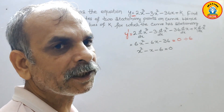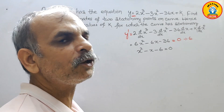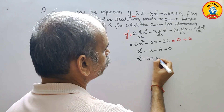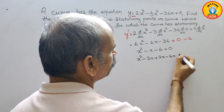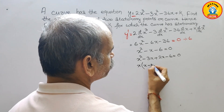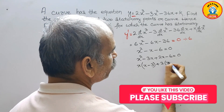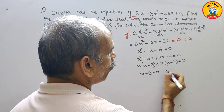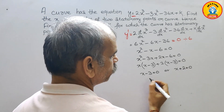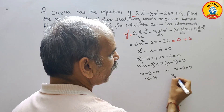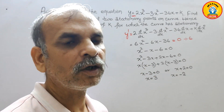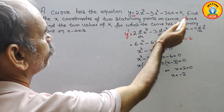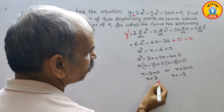Now solve it by middle term splitting. 6 means this will be 3 and 2, so we take minus 3 and plus 2. It becomes x² - 3x + 2x - 6 = 0, giving x(x - 3) + 2(x - 3) = 0. Therefore x - 3 = 0 or x + 2 = 0, so x = 3 and x = -2. Those are the x-coordinates of the two stationary points.